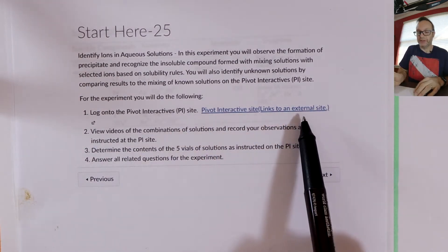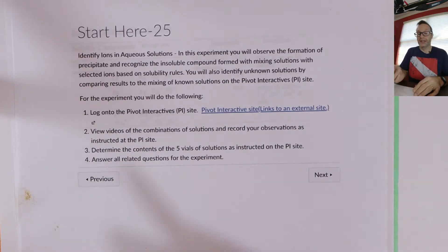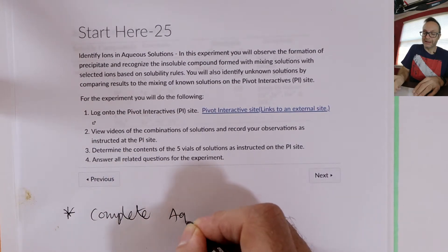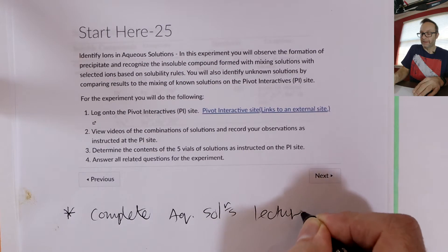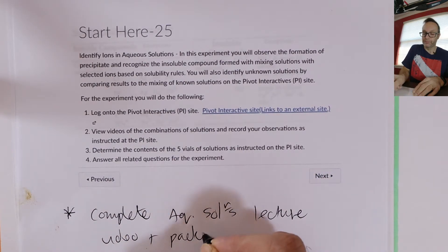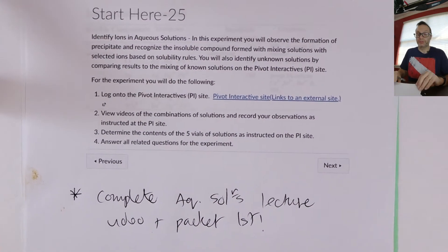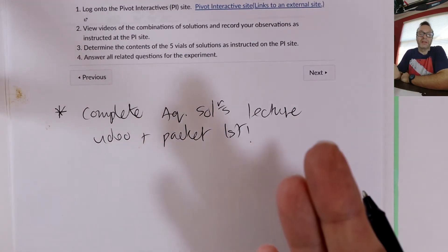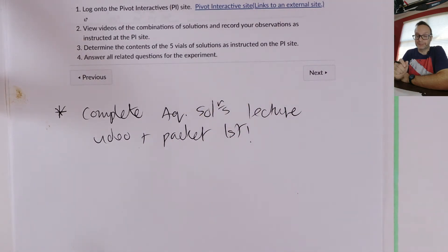So first things first, you're going to go to Pivot and do the experiment. There are videos there, there are questions. And to be honest, all the videos and questions are essentially identical in many ways to what's in the Aqueous Solutions packet. So I'm going to give you a little bit of a checklist down here. Complete Aqueous Solutions lecture video and packet first. So you know, it's typical what we do, but just to remind you, always complete the lecture video first. And that really covers this stuff in a lot of detail.